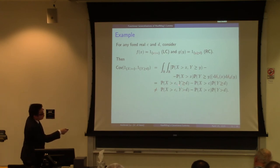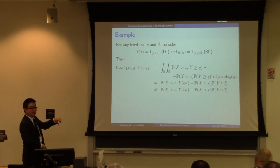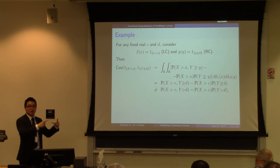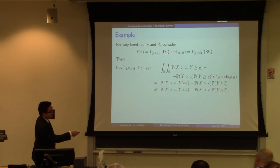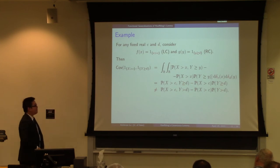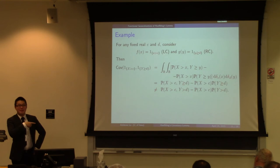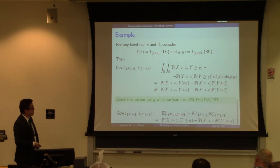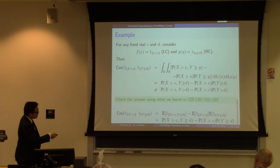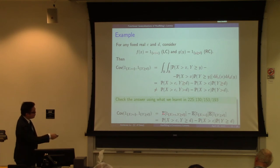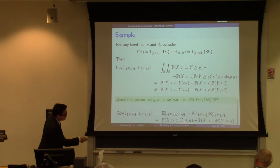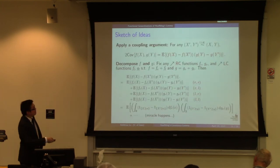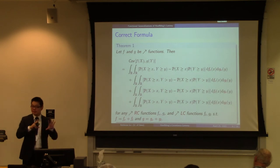Notice that for the y event, the formula gives a sharp inequality — greater than or equal to — not a strict inequality. If we use the formula in the literature, we would get y strictly greater than d. The correct formula uses the sharp inequality, which can be verified directly from first principles: the covariance of two random variables equals the expectation of the product minus the product of the expectations, and the expectation of an indicator function is simply a probability — and here the probability involves a sharp inequality for the y event.